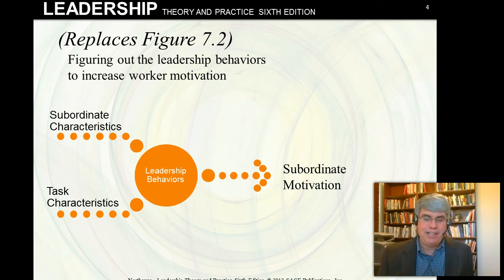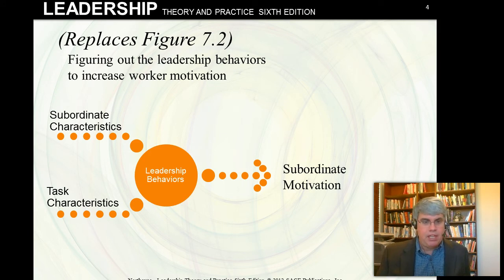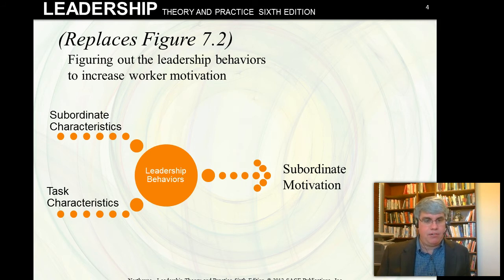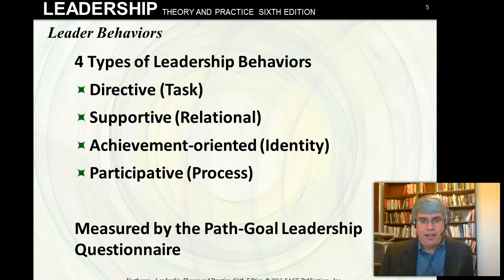Figure 7-2 tries to indicate how leaders figure out what behaviors are necessary to increase worker motivation. There are two inputs: subordinate characteristics — the worker's needs — and the task characteristics. In light of those two things, the leader chooses the appropriate behavior that will lead to subordinate motivation. The leader looks at the people under their authority and the task, chooses the appropriate style, and the subordinate will be motivated to follow the path and accomplish the goal.